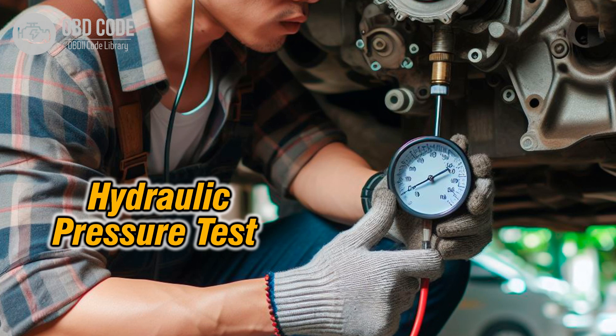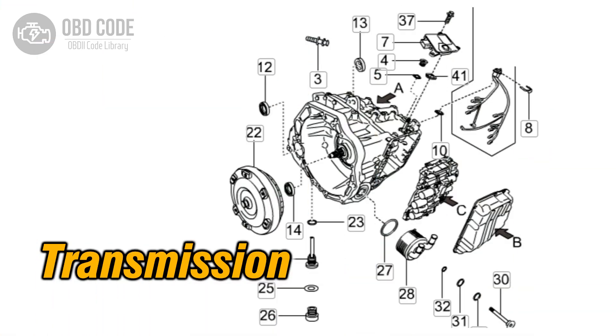5. Conduct a transmission pressure test to verify proper hydraulic pressure during the 2-3 shift. Low pressure can indicate a malfunctioning shift solenoid, valve, or pump. 6. If no issues are found during the above steps, consider performing a mechanical inspection of the transmission. This may require removing the transmission pan to inspect for debris or signs of internal damage specifically related to the 2-3 shift.